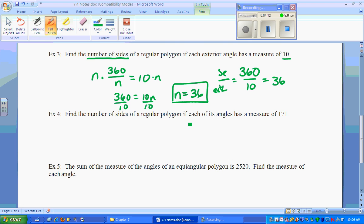Find the number of sides of a regular polygon if each angle has a measure of 171. This is the interior, because I didn't say exterior. Remember that. So the 171 is the interior.